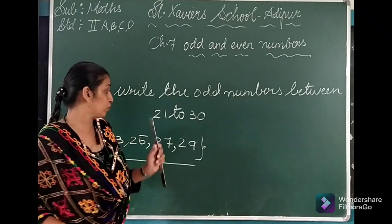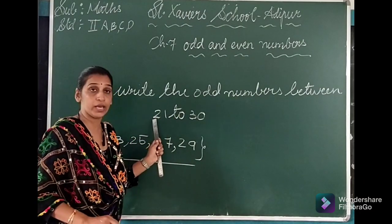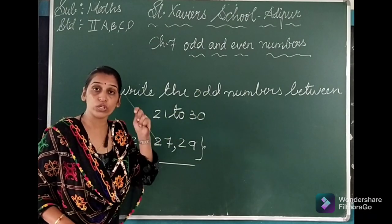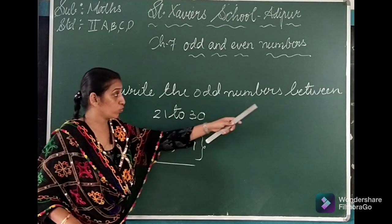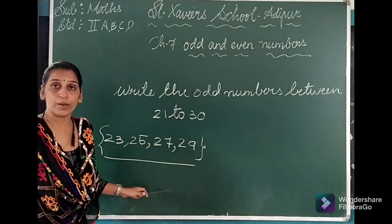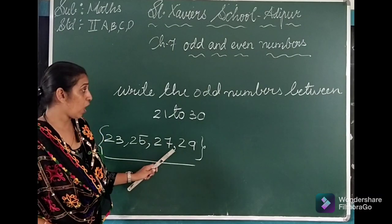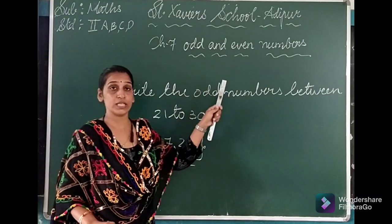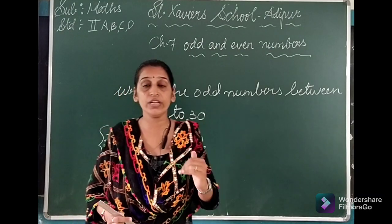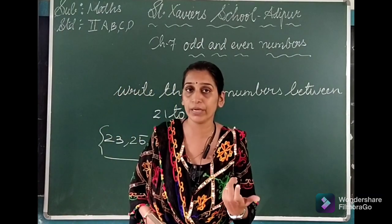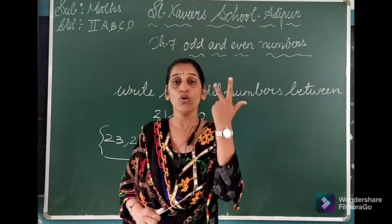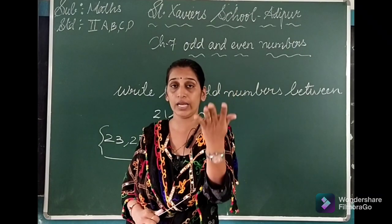Many of you might be asking whether 21 is odd. Yes, 21 is an odd number. But what we have to keep in mind is that we have to write numbers between 21 and 30 — not including 21 itself. What we have to keep in mind: even numbers end in 0, 2, 4, 6 and 8.